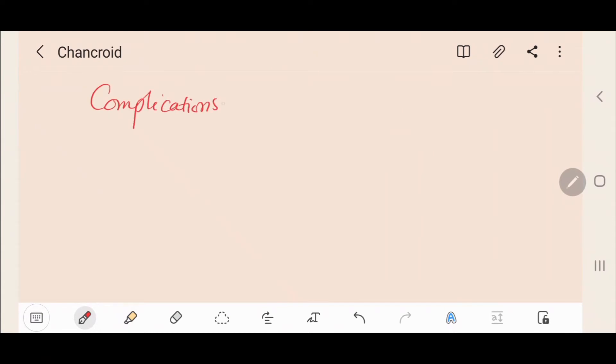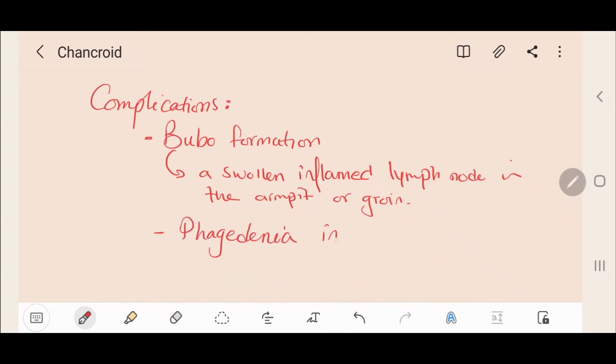As for the complications of chancroid, the first is bubo formation. A bubo is a swollen inflamed lymph node in the armpit or groin, which is painful. The second complication is phagodynia in males, which means the rapidly spreading necrotic ulceration of the penile tissue.